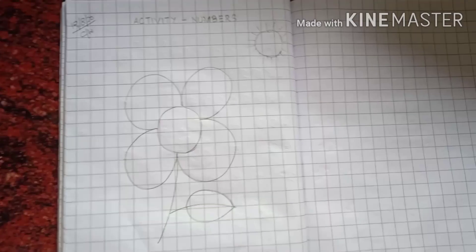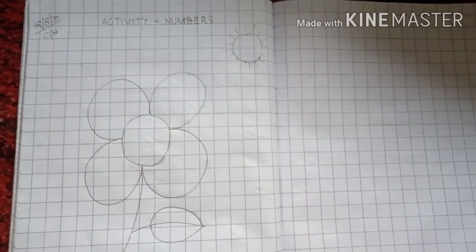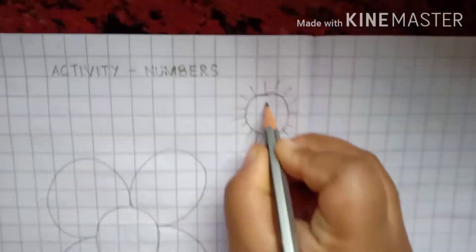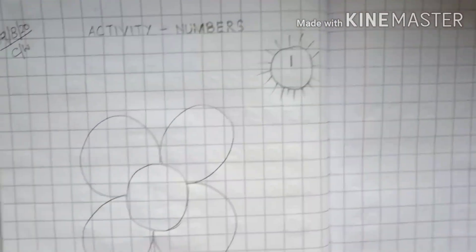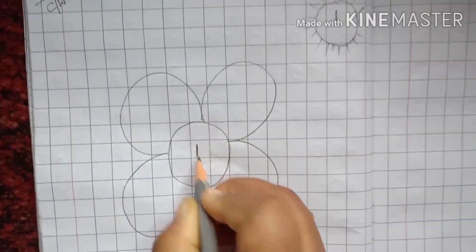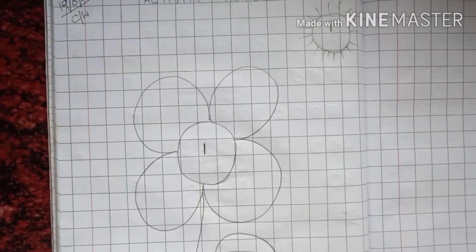Now, we will give some numbers. Alright. I will mark the sun with number 1. And the same here with number 1.